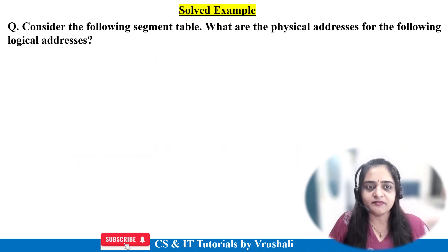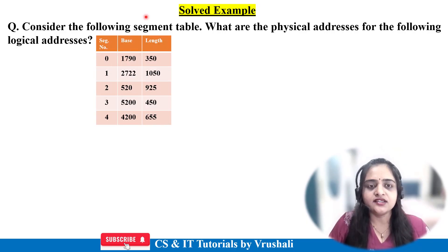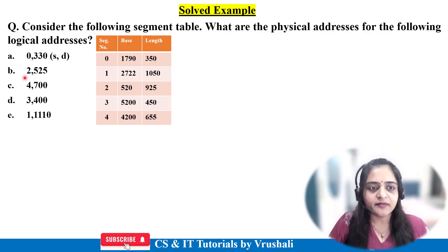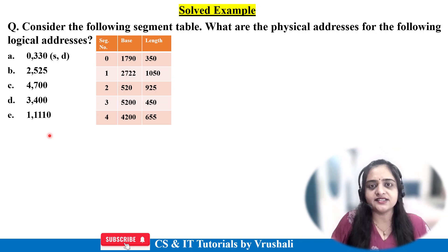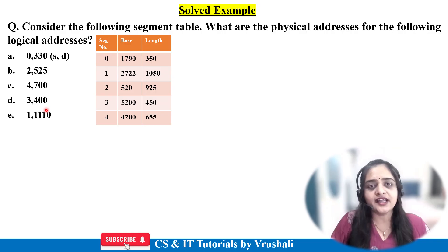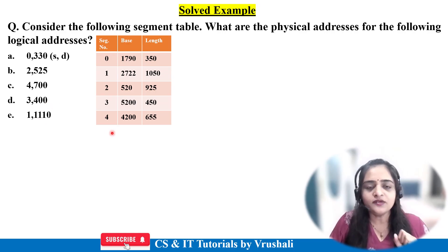Now let's understand the solved examples. This example has been asked in previous year question papers. The question says: consider the following segment table with columns segment number, base address, and length. You have to find out the physical address for the following logical addresses — segments 0, 2, 4, 3, 1 with their respective logical offsets. Logical address means the address from virtual memory, and you have to find the physical address — where the segment is actually stored in RAM.